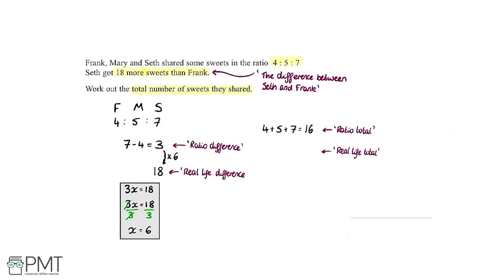That gives us 96. Because this is a calculator paper we can just put that into our calculator and speed up our working. This is the answer here, 96 is our real life total, the amount of sweets that they had. We're going to write that down here in the answer box.